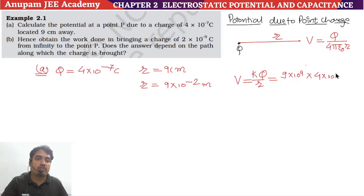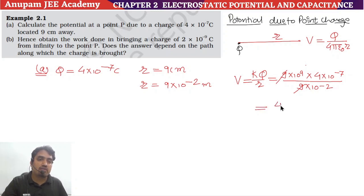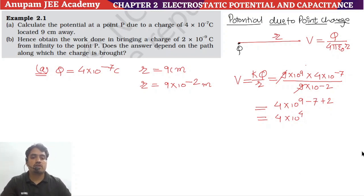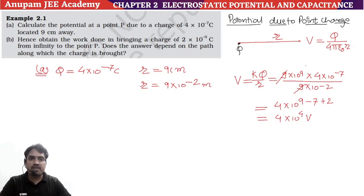Substituting: Q = 4×10⁻⁷ and R = 9×10⁻² meters. The 9s cancel, giving 4×10⁽⁹⁻⁷⁺²⁾ = 4×10⁴. So the answer for Part A is 4×10⁴ volt.